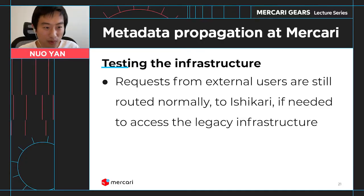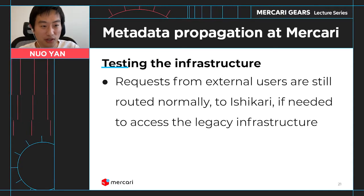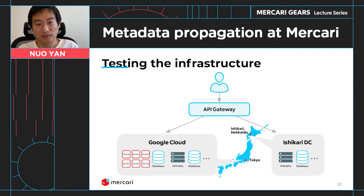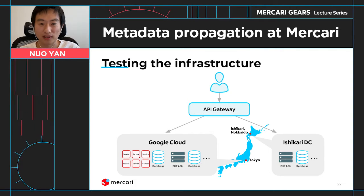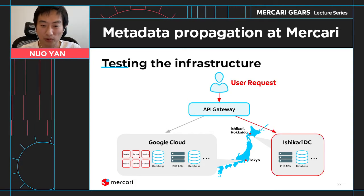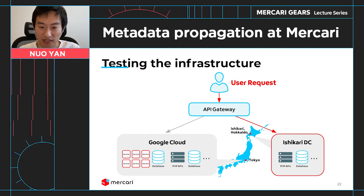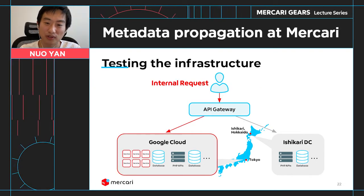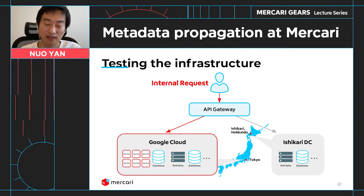We don't want normal external user requests to go to the new infrastructure. If you look at the diagram, you can see this will be the ideal workflow. When requests come to the API gateway, normal user requests should be routed to Ishikari data center, and our internal testing requests should be routed to the new PHP APIs we set up in Google Cloud.